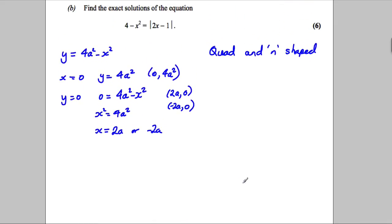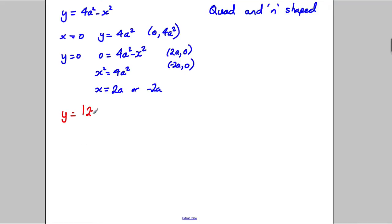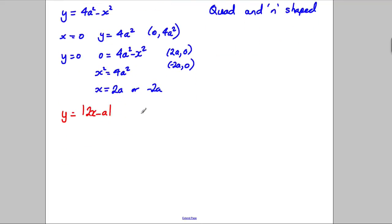Now, what about the other one? I'll draw it in a different colour, so if y was equal to the modulus of 2x subtract a, like that. Well, a's a positive constant. This is just going to be like the graph y equals 2x subtract a, like a straight line graph, which would obviously cross at negative a here.